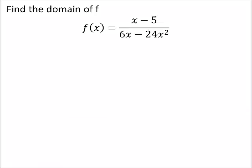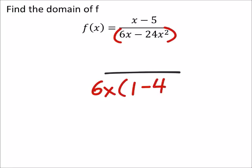So let's look at factoring our denominator right here, which it looks like we can factor out a 6 and an x. So I have 1 minus 4x, like this, and of course we've got the x minus 5 and the f of x.